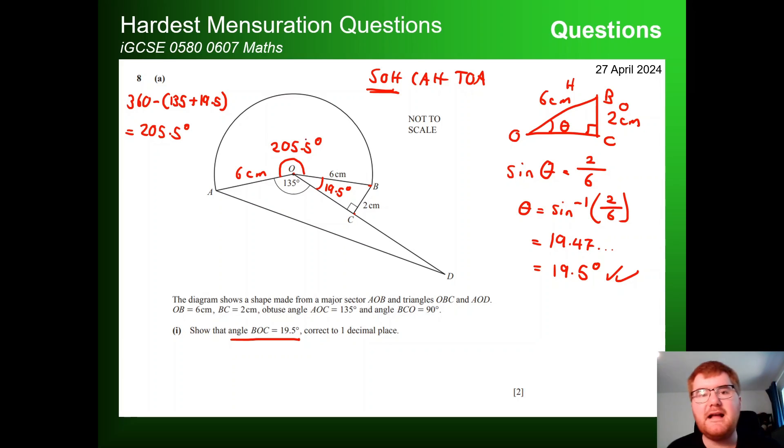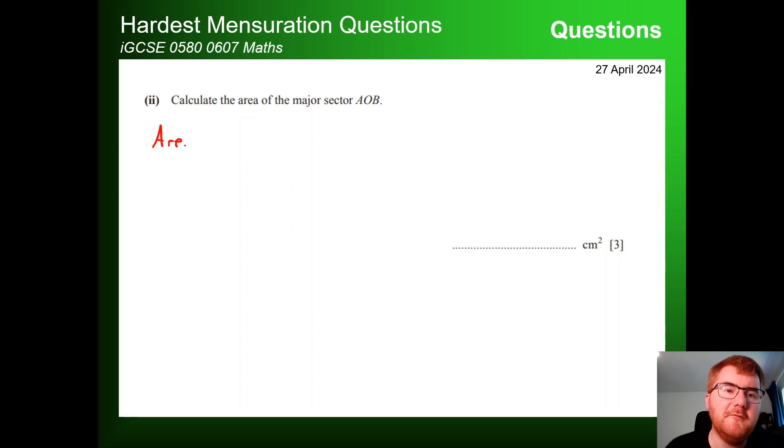So to work out this area, using the similar formula from before, we take the angle 205.5 divided by 360 times pi r squared. So pi times six squared. All I need to do to write for my working here, I don't need to do anything else. Then keep it simple. And that gives us as a decimal 64.55. Again, we generally round to one decimal place. So 64.6. And that's going to be square centimetres. They generally give us the units on Cambridge, we're not going to get a mark taken off for forgetting the square centimetres.